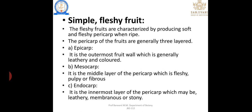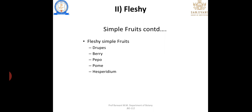Fleshy fruit: the pericarp is fleshy, bulbous, or pulpy in nature. The pericarp is classified into three layers: epicarp — the outermost wall, generally leathery and colored; mesocarp — the middle layer, fleshy and pulpy or fibrous; and endocarp — the innermost layer, which may be leathery, membranous, or stony.